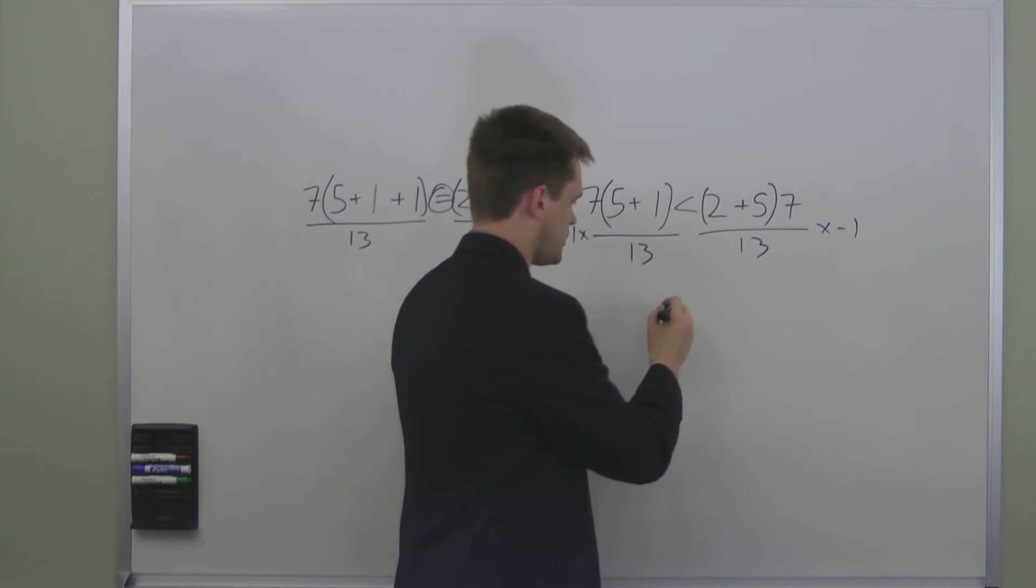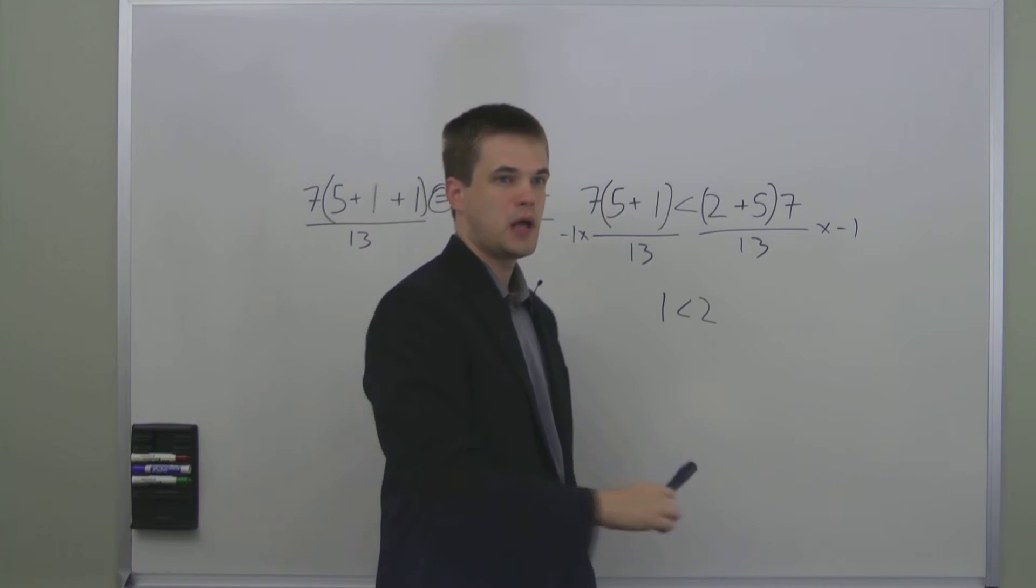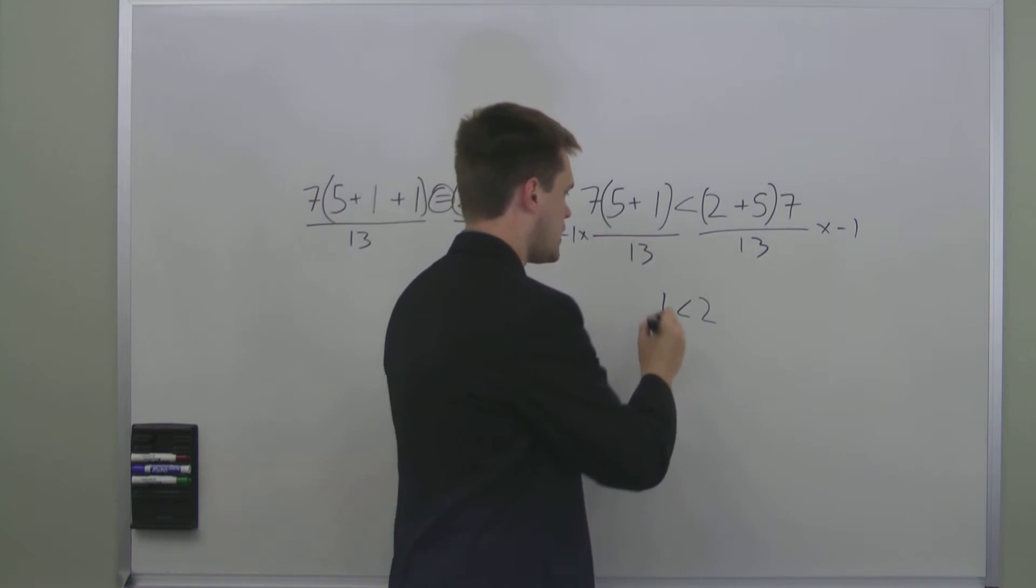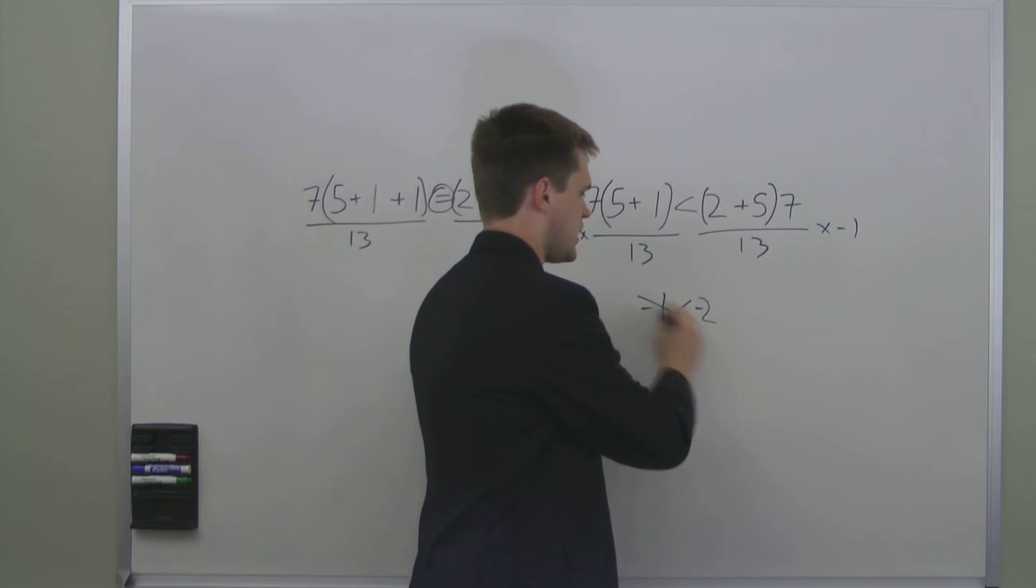Because in the most simple of examples, if we have an equation that says 1 is less than 2 and we multiply both sides by negative 1, that becomes negative 1 is less than negative 2, which is not true.